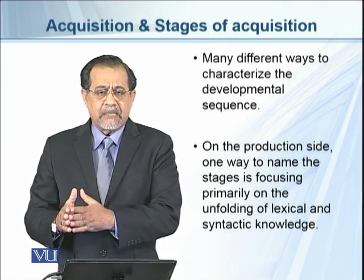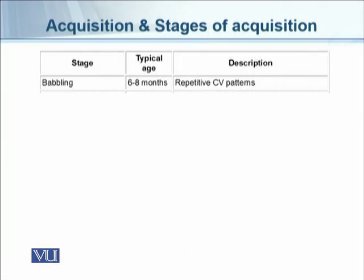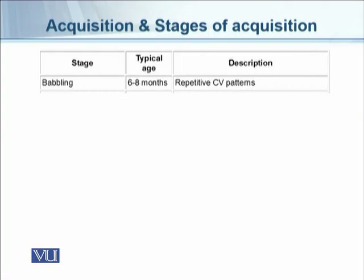The first stage is called babbling, typically occurring between 6 to 8 months. During this stage, the child is able to repeat CV (consonant-vowel) patterns, for example sounds like 'ma', 'ba', and so on.